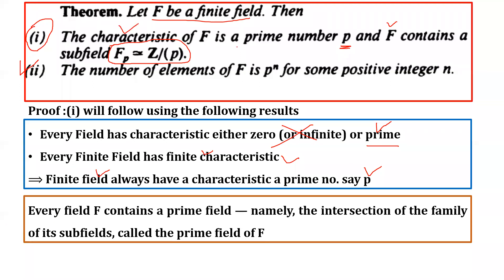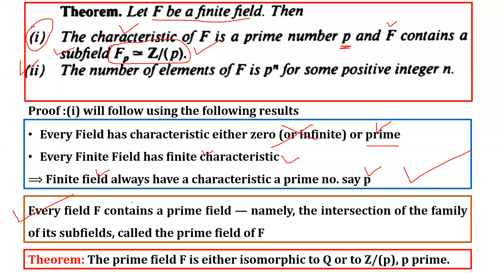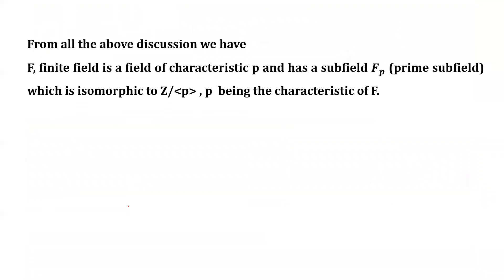We have now verified that the characteristic of F is prime. The next thing to prove is that the subfield fp follows from what was discussed in the last lecture: the prime field is isomorphic either to the rationals or to Z/pZ. But the rationals are infinite, and F is given as finite. Since F is a finite field of characteristic p, the rational option is ruled out, leaving only Z/pZ. Therefore we have the subfield fp which is isomorphic to Z/pZ.